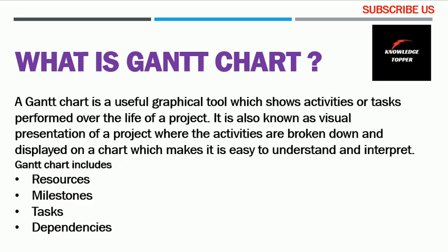First we will look at the basic definition of a Gantt chart, then we will discuss it in more detail with the help of an example. A Gantt chart is a useful graphical tool which shows activities or tasks performed over the life of a project. It is also known as a visual presentation of a project where activities are broken down and displayed on a chart, making it easy to understand and interpret.